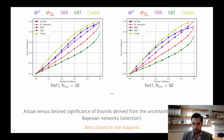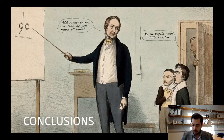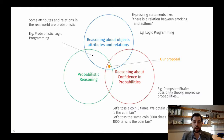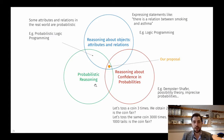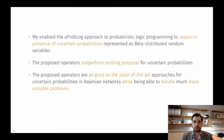To conclude, let me reiterate where this proposal lies. We have reasoning about objects, attributes, and relations in the world, which can be addressed with logic programming. In cases of uncertainty we use probabilistic reasoning, but probabilities alone do not tell the whole story — we also want to say how confident we are in those probabilities. Our work enables the AProbLog probabilistic logic programming approach to reason in the presence of uncertain probabilities represented as beta distributed random variables.